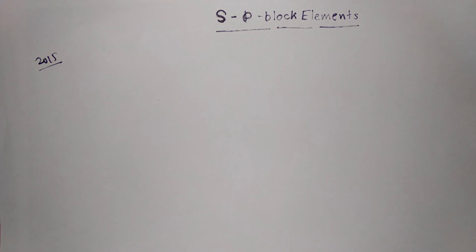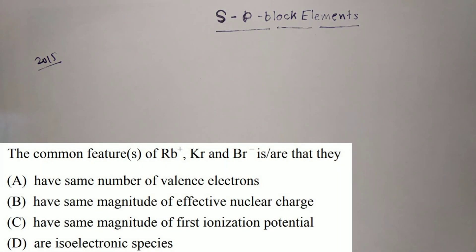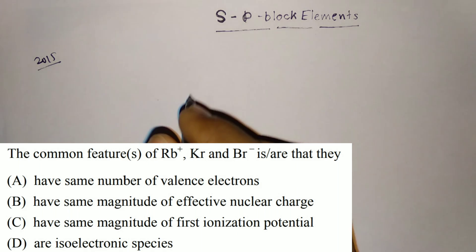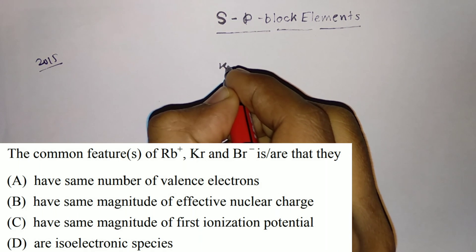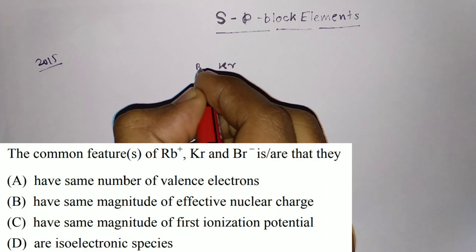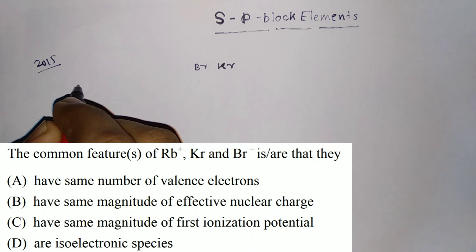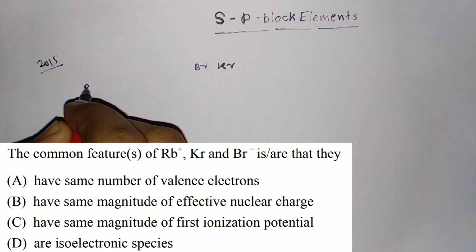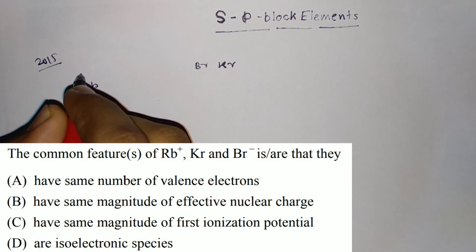The first question from 2015 was: the common features of Rb+, Krypton, and Br- are that they have the same number of valence electrons, the same magnitude of effective nuclear charge, the same magnitude of first ionization potential, or that they are isoelectronic species. From the periodic table, you can see Krypton, before it is Bromine, and in the first group there is Rb.